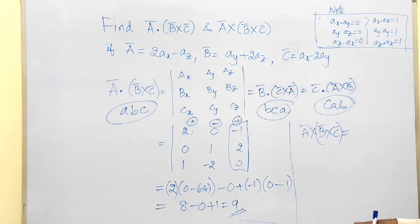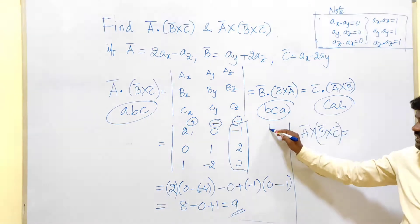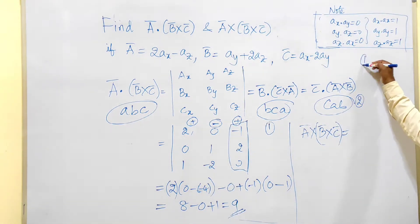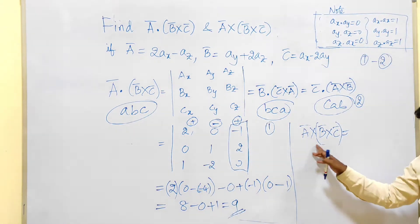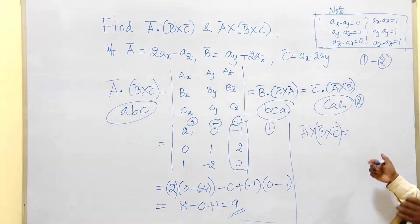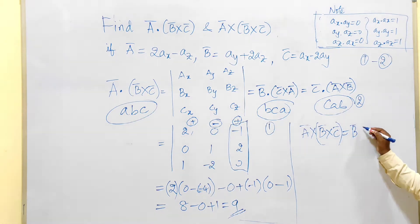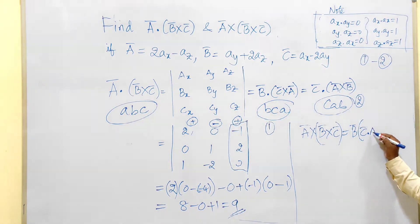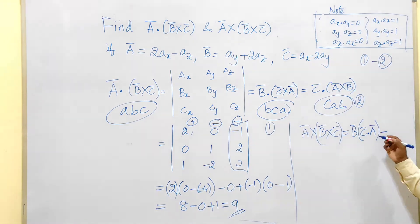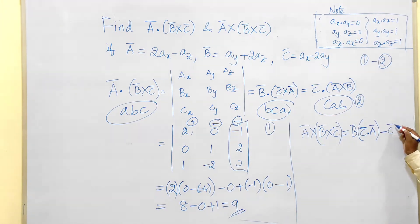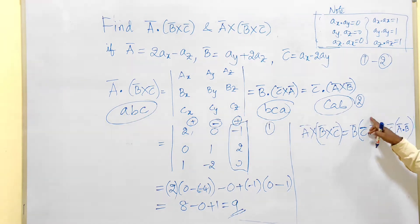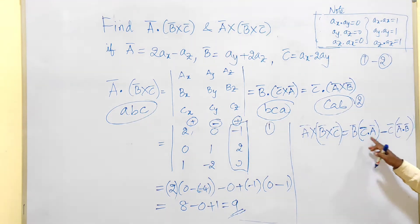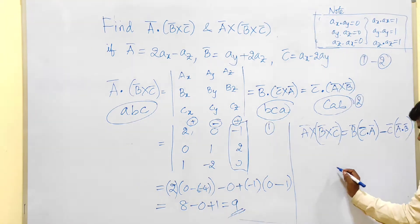The formula for a bar cross (b bar cross c bar) is the BAC-CAB rule: it equals b bar(c bar · a bar) − c bar(a bar · b bar). It has two terms. Each is a vector multiplied by a scalar dot product, so the overall result is a vector.